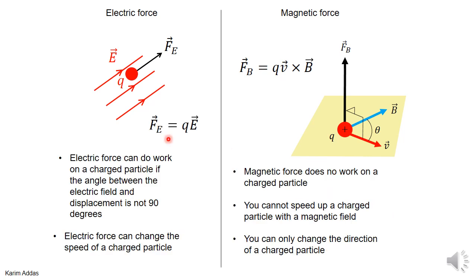To summarize: an electric force can do work on a charged particle if the angle between the electric force and the displacement is not 90 degrees, so the electric force can change the speed of a charged particle. But a magnetic force can do no work on a charged particle — you can't speed up a charged particle in a magnetic field; you can only change its direction.